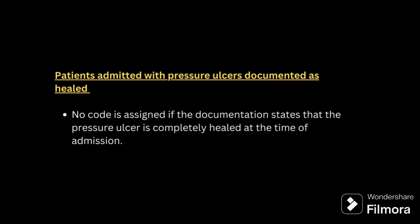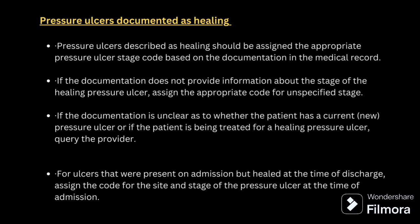If a patient is admitted with a pressure ulcer documented as healed — healed means it is cured — there is no need to assign a code. It is a very easy and simple guideline for Chapter 12. Next, pressure ulcer documented as healing means it is getting cured. You have to read the documentation carefully and see at what stage the pressure ulcer is healing, then assign that stage code. For example, if it is healing at stage 2, assign stage 2.